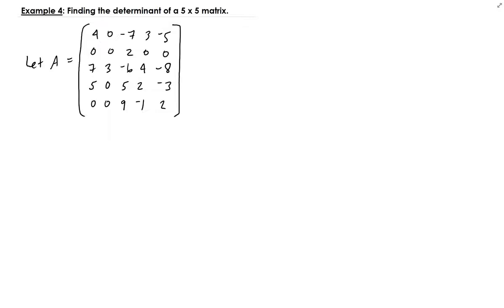In this lesson, we're going to find the determinant of a five by five matrix. We're going to use a combination of techniques, but the main thing is we're still going to use cofactor expansion. You want to use the row or column with the most zeros. Looking at this matrix, we can use the second row.